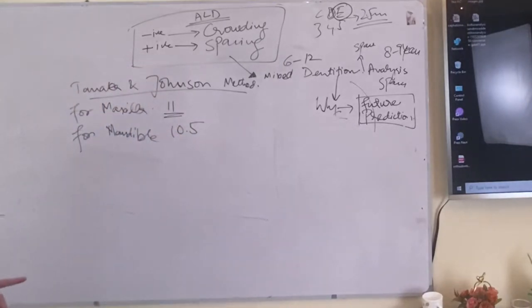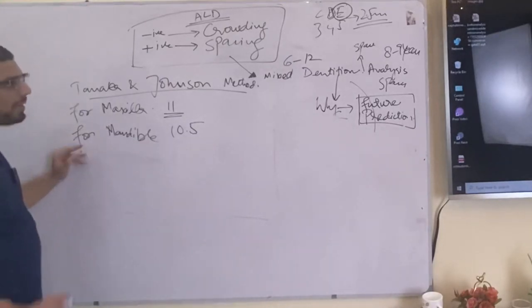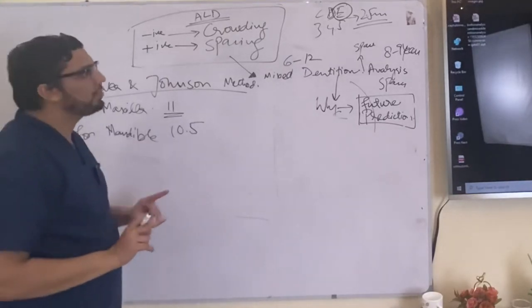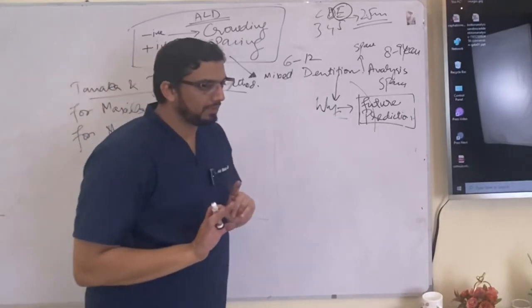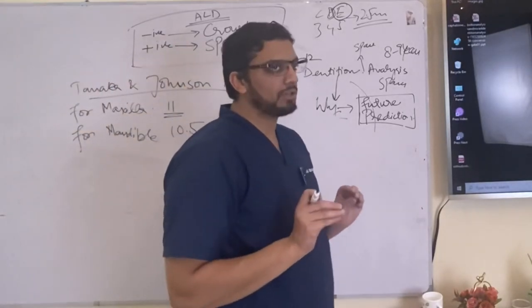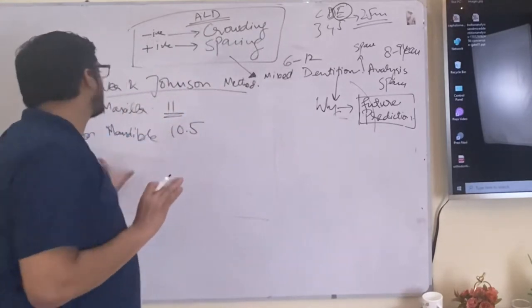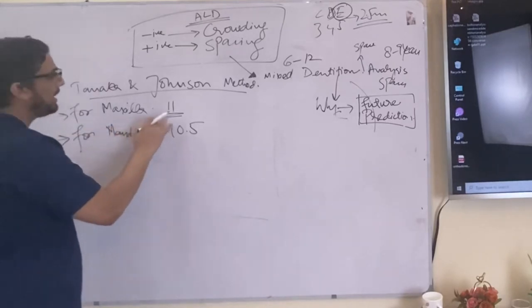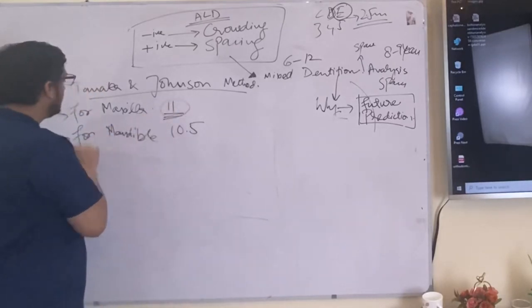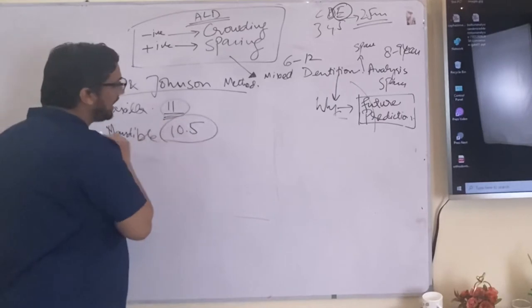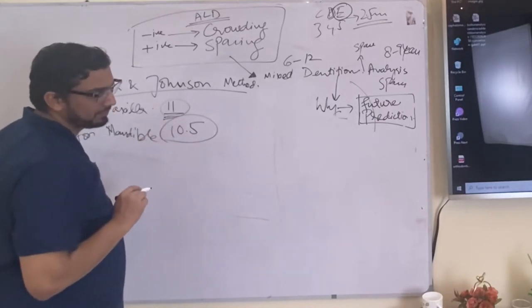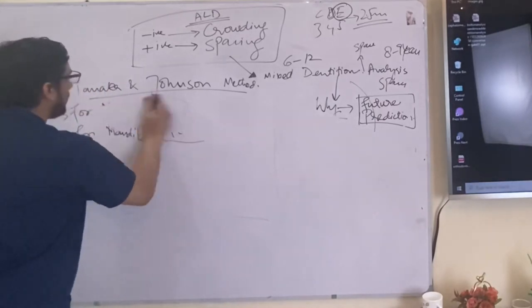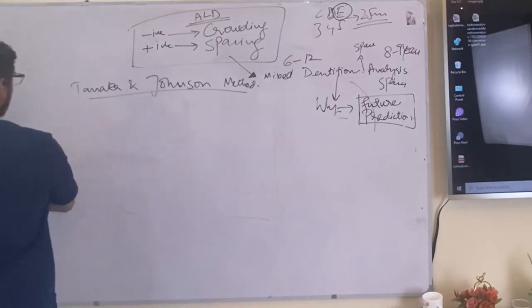This again is a three step process and how you will come to know the missing data for doing the analysis. What was the missing data? What is the mesiodistal width of 3, 4 and 5 that is required to remember here. Before you proceed any further you need to memorize the coefficient: for the maxilla is 11, for the mandible is 10.5. Got it? How we perform the Tanaka and Johnson method?